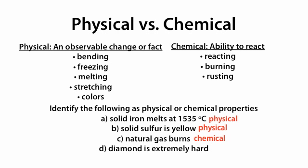And D, diamond is extremely hard. We haven't listed hardness as a physical or chemical property. But if we think about it, the fact that diamond is extremely hard has nothing to do with its ability to react. It's an observable fact about diamond. So that falls under the physical category.